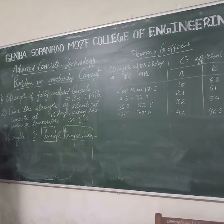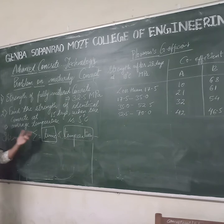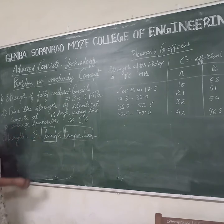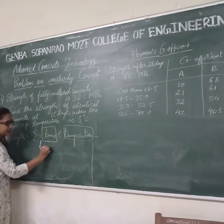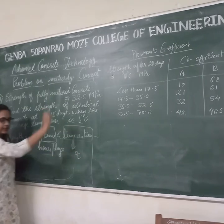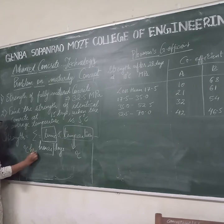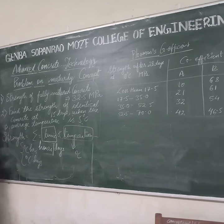Maturity is the summation — or rather the multiplication — of time along with temperature. Two units are there for determining maturity: you can take time in hours or days, and temperature in degrees centigrade. So the unit for maturity of concrete will be degree centigrade hours or degree centigrade days. These are the two units of determining strength of concrete through the maturity concept.